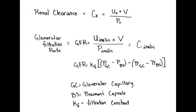What is the equation of renal clearance? The equation of renal clearance is CX equals UX times V over PX. So that stands for clearance of substance X, which is equal to urine concentration of the substance X times the urine flow rate over plasma concentration of the substance X.